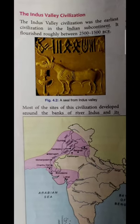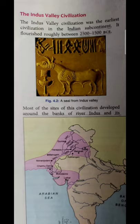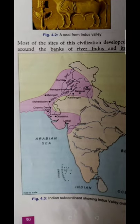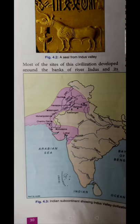When we talk about Indus Valley Civilization, we need to understand about the Indian subcontinent and where it flourished. The extent of Indus Valley Civilization can be seen as between 2500 to 1500 BCE. Most of the sites of Indus Valley Civilization were developed around the bank of the river Indus. This map shows the Indian subcontinent near the river Indus and its tributaries in the northwest part, and this is also known as Harappan Civilization.